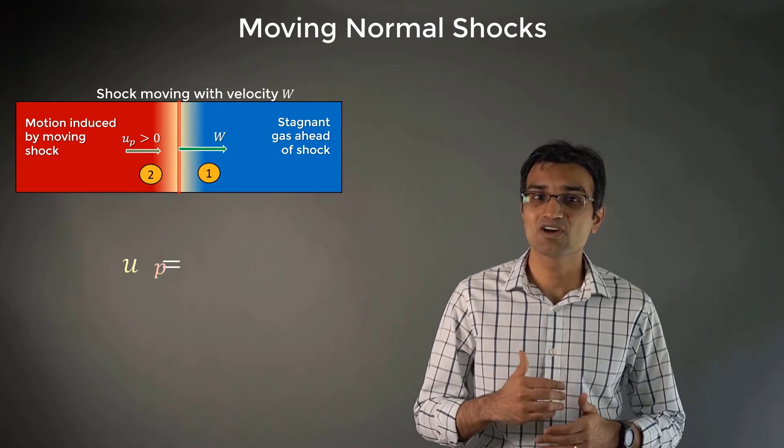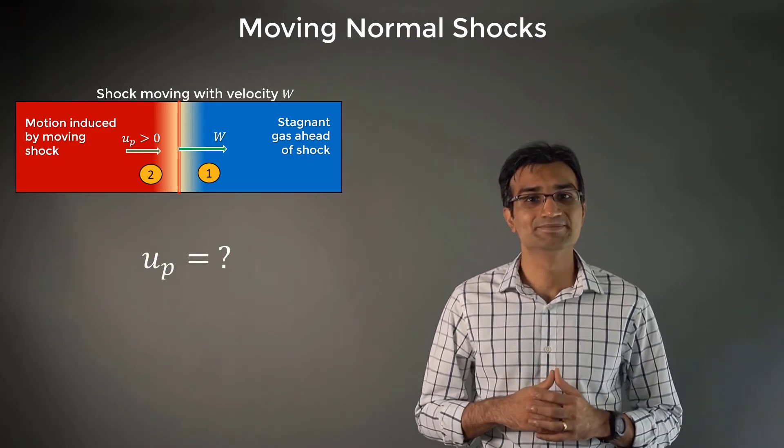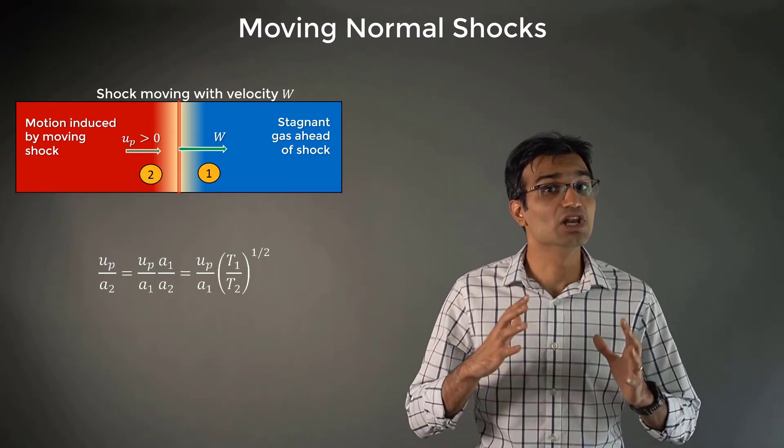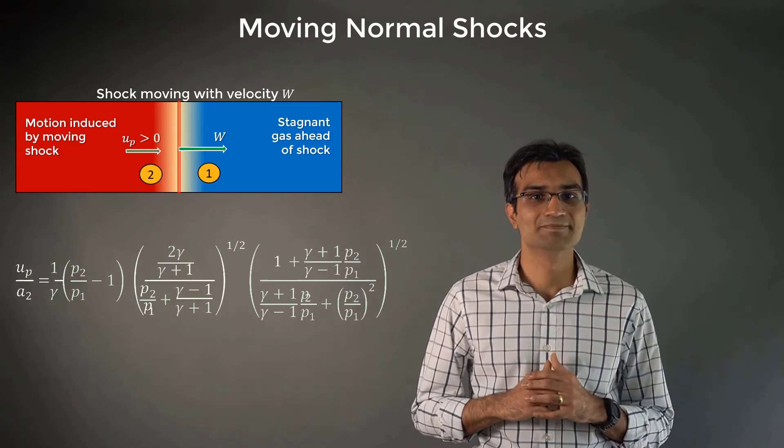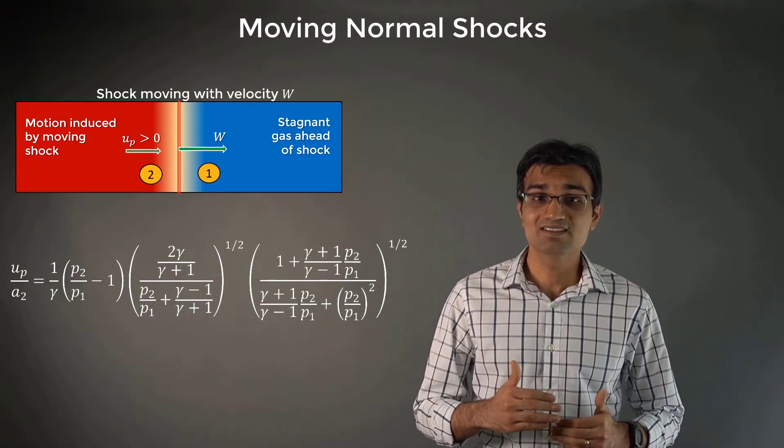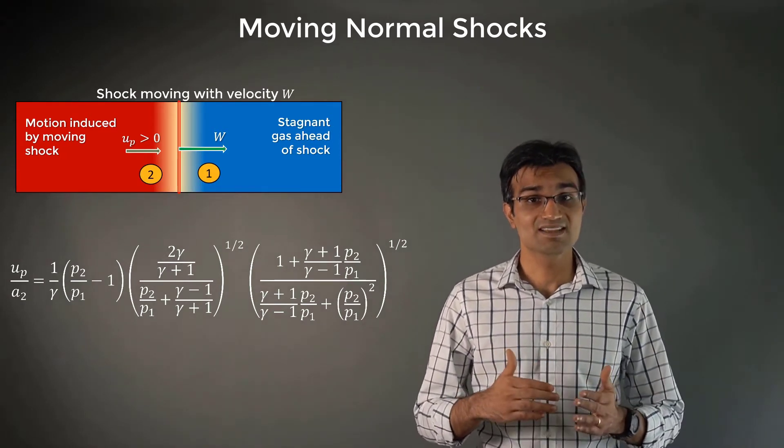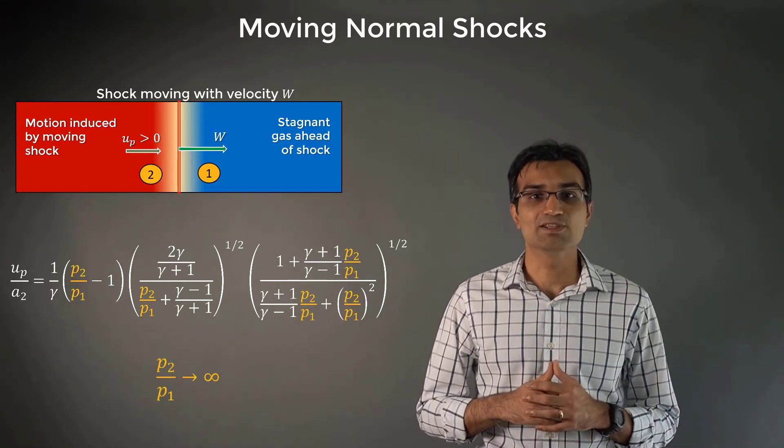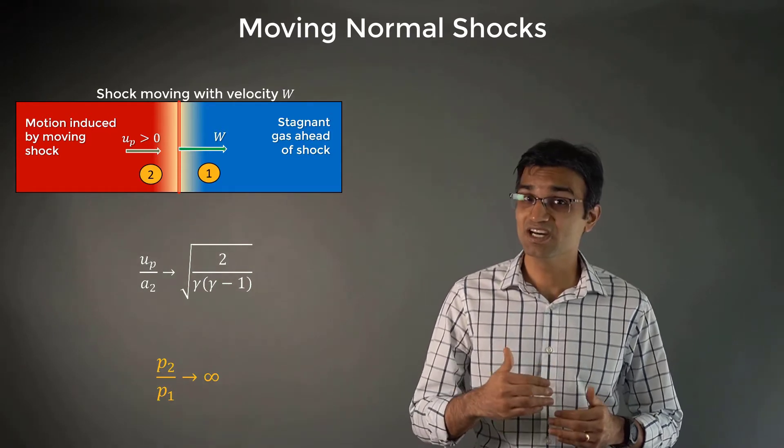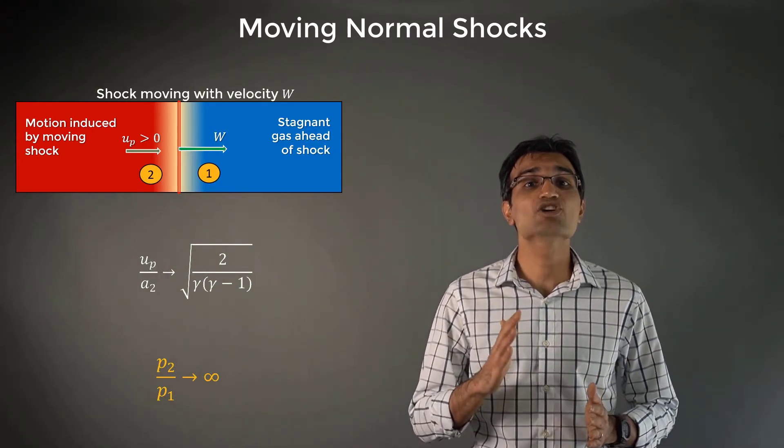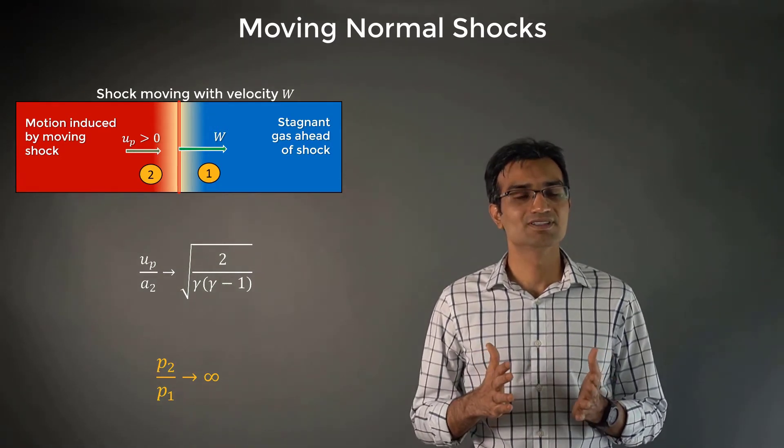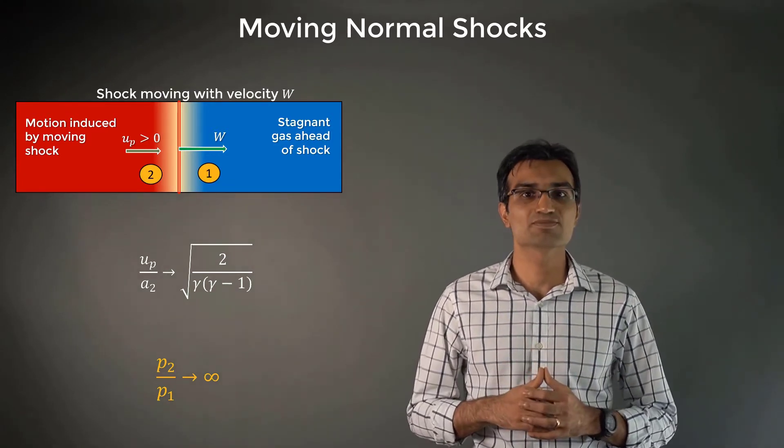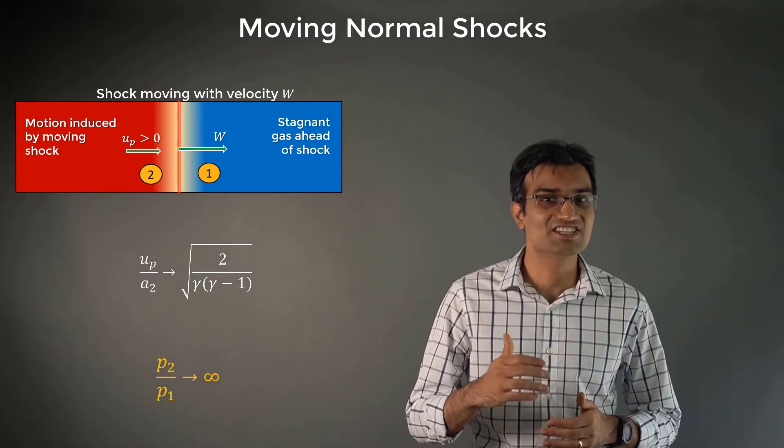How large do you think this velocity of this induced motion can be? Well, to answer that, let's look at it in terms of the local Mach number given by this equation. Now, if we consider the infinitely strong shock, that is P2 by P1 goes to infinity, we get the following limiting value. This value turns out to be 1.89 in the case of air. Therefore, a strong moving shock wave can even induce a supersonic mass motion behind it, not just a gentle breeze.